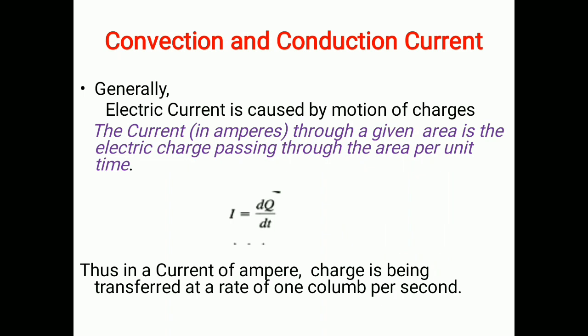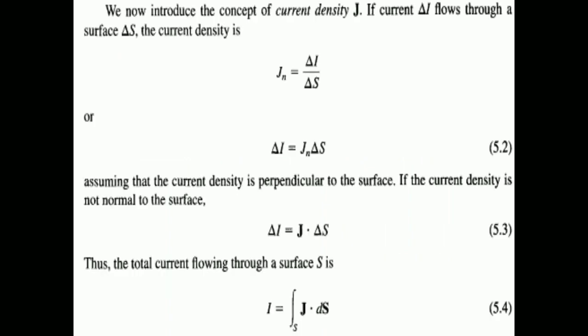Current density: consider a planar surface dS, through which current del-I flows. The ratio between these is called current density, so J_n = dI/dS, meaning dI = J·dS. If the current density is normal to the surface then dI = J_n·dS. If it is not normal, the dot product exists: dI = J·dS. To find total current, integrate: I = surface integral of J·dS.